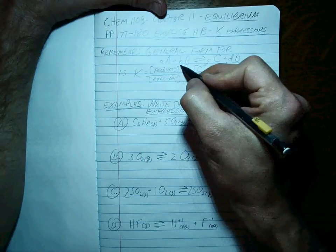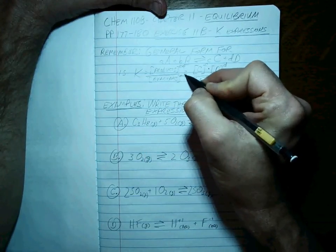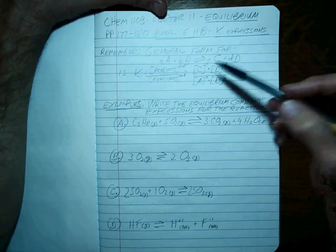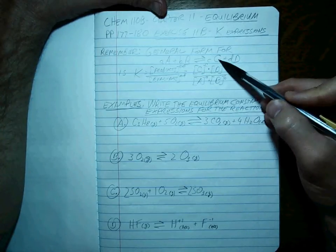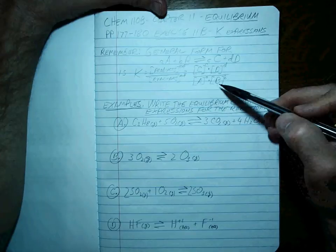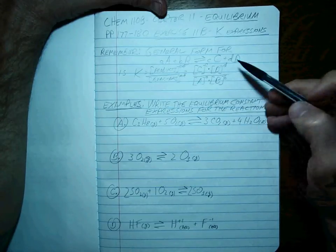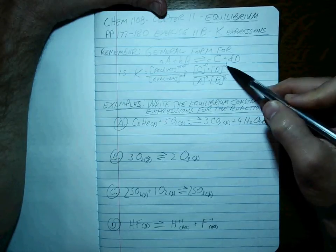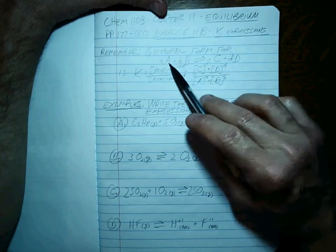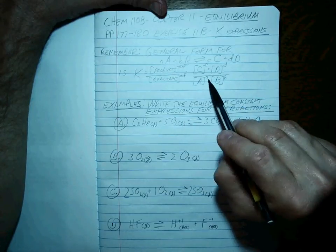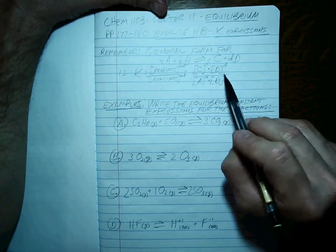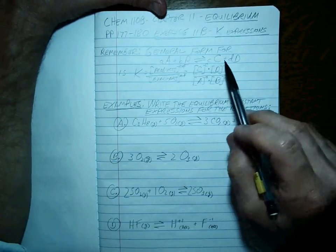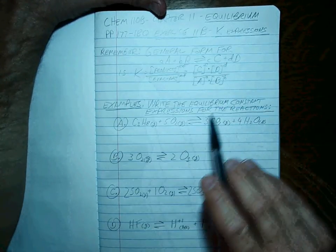the reactants taken to the powers of the exponents that are related to the coefficients. Okay, so for this reaction, C concentration taken to the little c power multiplied by—never added—the concentration of D taken to the little d power divided by A taken to the coefficient power times concentration of B in moles per liter taken to the b power.